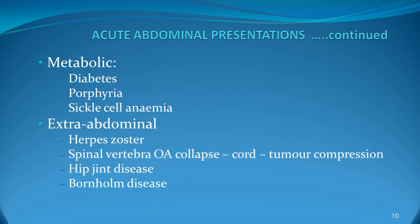Metabolic causes of acute abdominal presentations include diabetes, porphyria, and sickle cell anaemia. Sickle cell can cause splenic problems and splenic infarction as well.